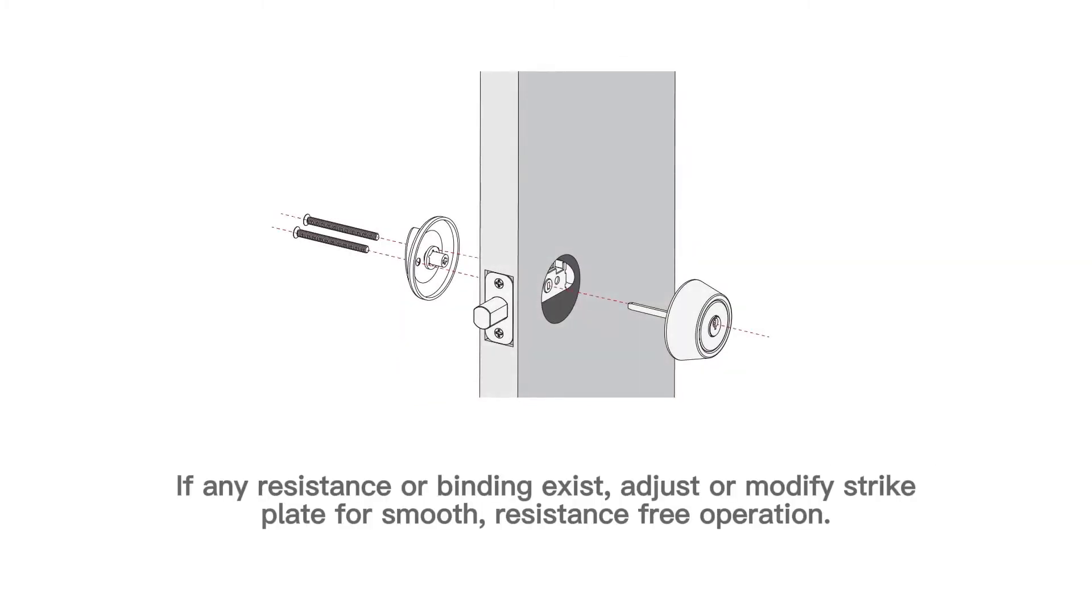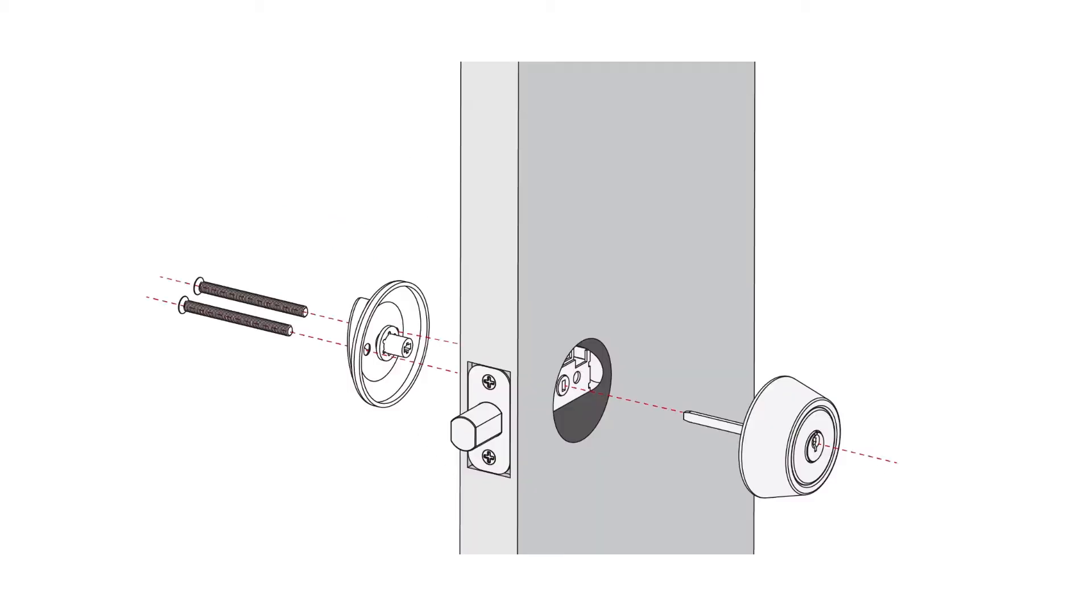If any resistance or binding exist, adjust or modify strike plate for smooth, resistance-free operation. Let's start now. Preparation: Remove existing lock set from the door and retain the deadbolt.